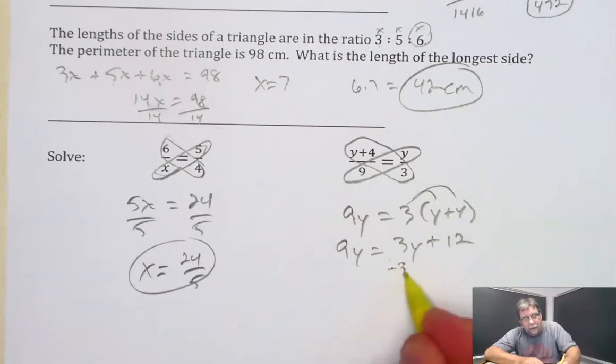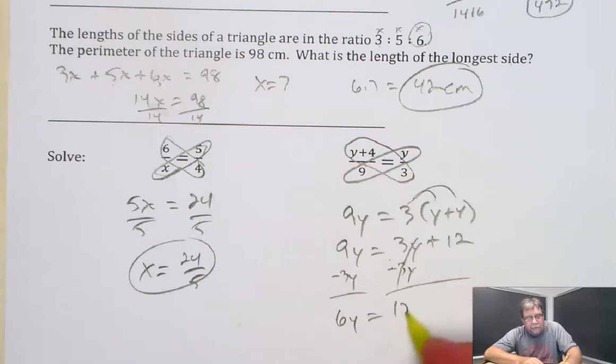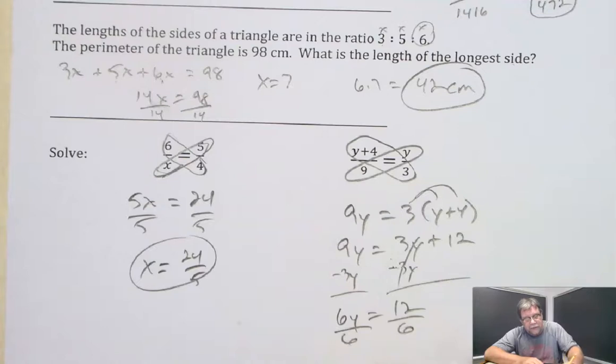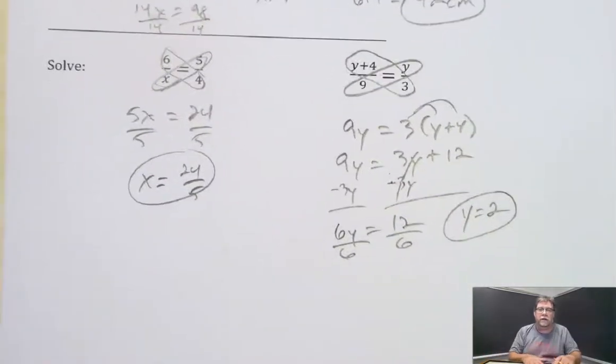I'm going to solve by subtracting 3y from both sides. This side will become 6y. This side becomes 12. And last but not least, we divide by 6, and y equals 2. There is our solution for that particular proportion.